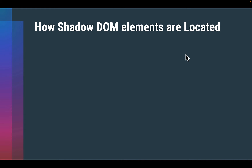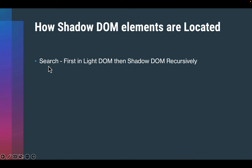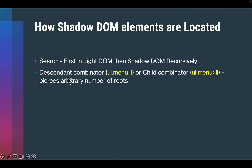Before we start the demo, let's go through some key points from the Playwright website. First, Playwright engines search for elements in light DOM in iteration order, then CSS or text engines search recursively inside open Shadow DOM roots in iteration order. In the CSS engine, the descendant combinator (space) and child combinator (greater-than sign) — any descendant or child combinator spans an arbitrary number of open Shadow roots, including the implicit descendant combinator at the start of the selector.